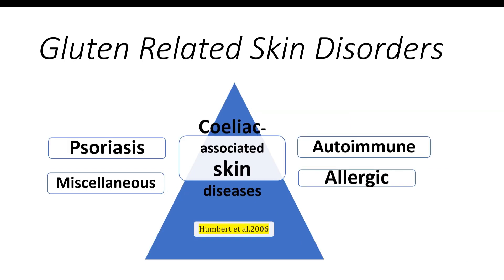Humbert et al. 2006 proposed a classification of celiac disease-associated skin diseases divided into four categories: autoimmune, allergic, psoriasis, and miscellaneous. In addition, sporadic associations with other skin diseases were subsequently reported.